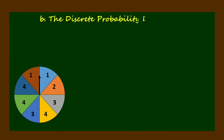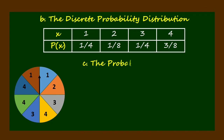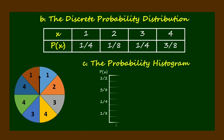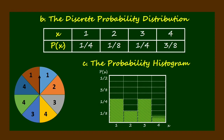After obtaining the values of the probabilities, the discrete probability distribution is presented in the preceding table. And now let's construct the probability histogram. That completes the solution required for example 3.